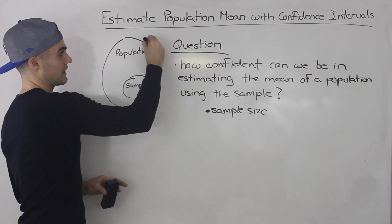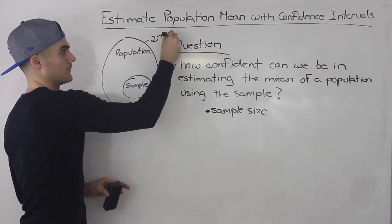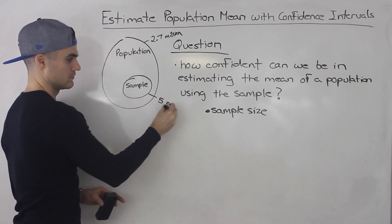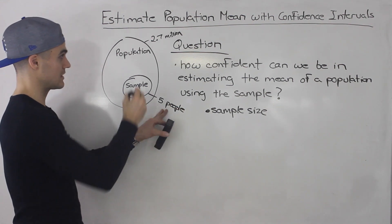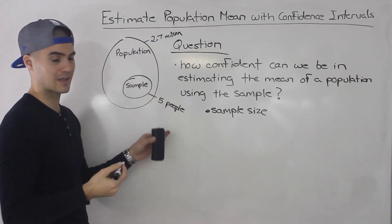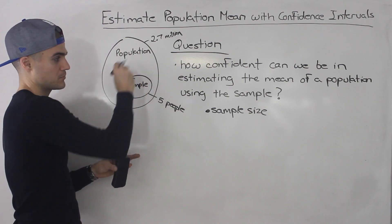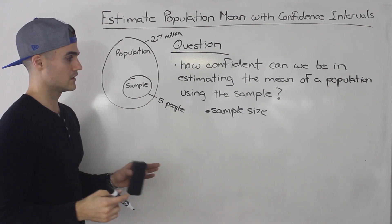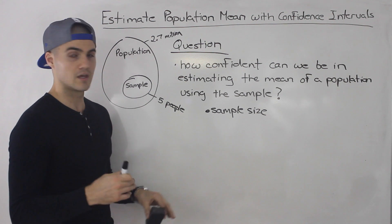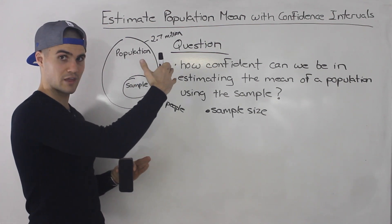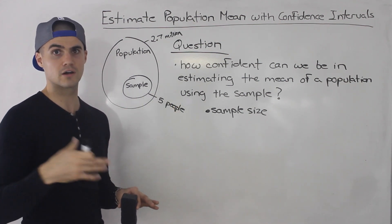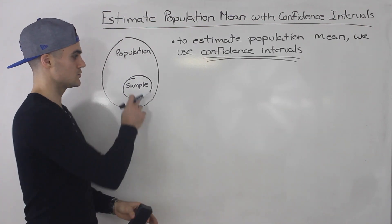So if we take a sample of just five people and try to estimate the population mean using only five people out of 2.7 million, how confident can we be? Probably not very confident. The higher the sample size, the more confident we can be in getting that estimate of the mean. The problem is the larger sample you use, the more resources that takes — the more people you have to interview, the more people you have to find, etc. Now, to estimate the population mean using a sample, we're going to be using something called a confidence interval.